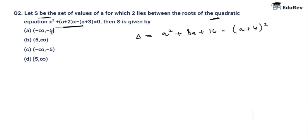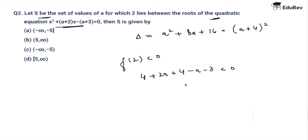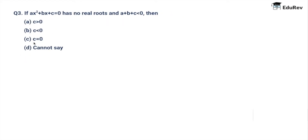Since 2 must lie between the roots of the quadratic equation, f(2) should be less than zero. So 4 + 2a + 4 − a − 3 < 0, which gives a + 5 < 0. Therefore a belongs to (−∞, −5). The answer is option C.